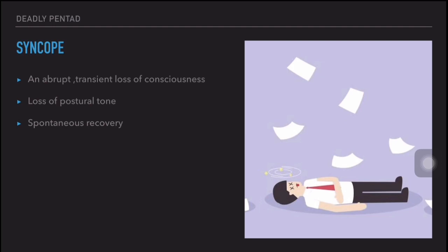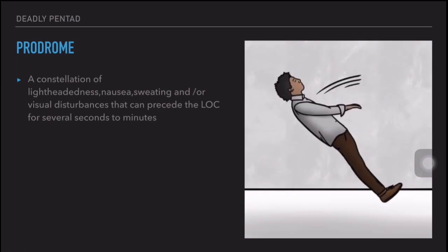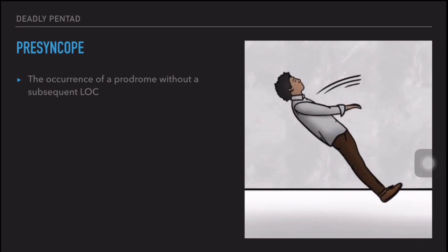As you know, syncope is defined as an abrupt transient loss of consciousness associated with loss of postural tone and spontaneous recovery. Syncope is preceded by a prodrome of lightheadedness, nausea, sweating, and visual disturbances for several seconds to minutes. Pre-syncope is defined as the occurrence of a prodrome without a subsequent loss of consciousness.